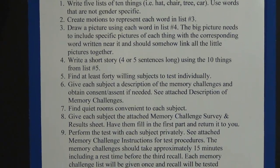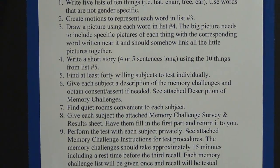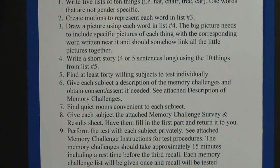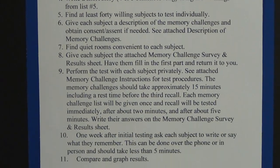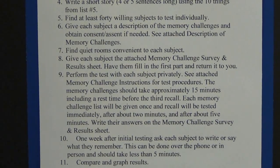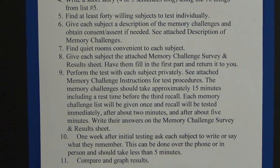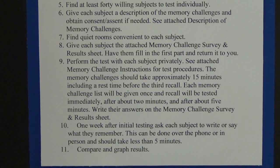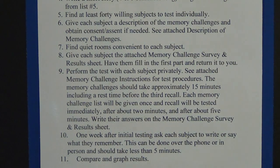Five, find at least forty willing subjects to test individually. Six, give each subject a description of the memory challenges and obtain consent or assent if needed. Seven, find quiet rooms convenient to each subject. Eight, give each subject the memory challenge survey and results sheet and have them fill in the first part. Nine, perform the test with each subject privately. The memory challenge should take approximately fifteen minutes, including a rest time before the third recall. Each memory challenge list will be given once and recall will be tested immediately after, after about two minutes, and after about five minutes. Write their answers on the survey and results sheet. Ten, one week after initial testing, ask each subject to write or say what they remember — this can be done over the phone or in person and should take less than five minutes. Then compare and graph the results.